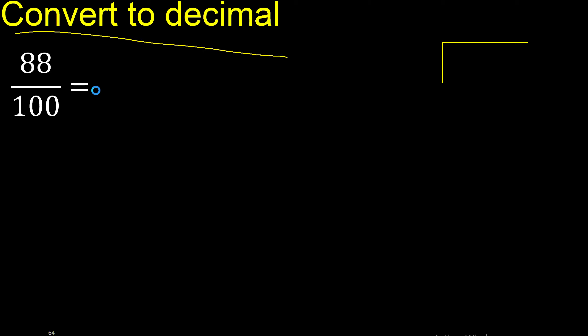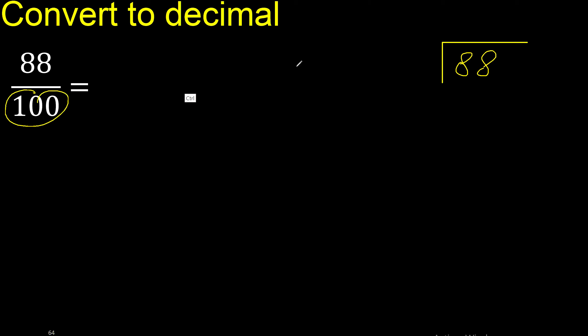88 divided by 100. 88 is less than 100, therefore complete — always complete with 0.